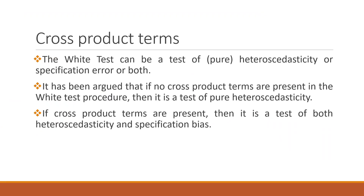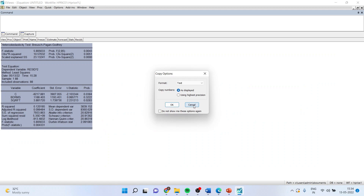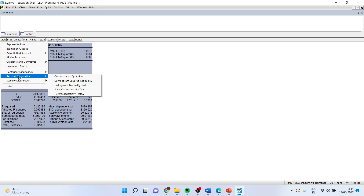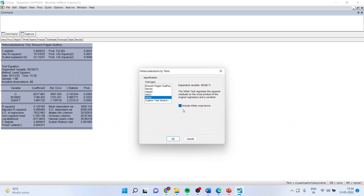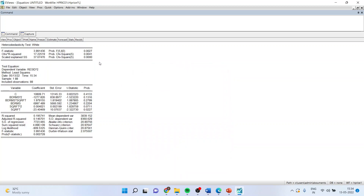Now, what to do if we have cross product terms? The White test can be a test of pure heteroscedasticity, or a specification error, or both. If no cross product terms are present in the White test, it is a test of pure heteroscedasticity. If cross product terms are present, it is a test of both heteroscedasticity and specification bias. To carry this out in EViews, go to View, Residual Diagnostics, Heteroscedasticity Test, activate the White test, and make sure to check 'include White cross terms.' Click OK. Our interpretation remains the same — as the p-value is less than 0.05, we reject the null hypothesis, meaning residuals are heteroscedastic.